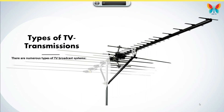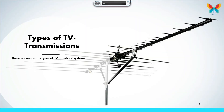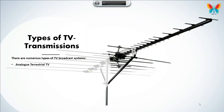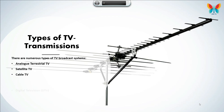Types of TV transmissions. There are numerous types of TV broadcast systems: analog terrestrial TV, satellite TV, cable TV, digital television (DTV), web TV, IPTV, and terrestrial TV.